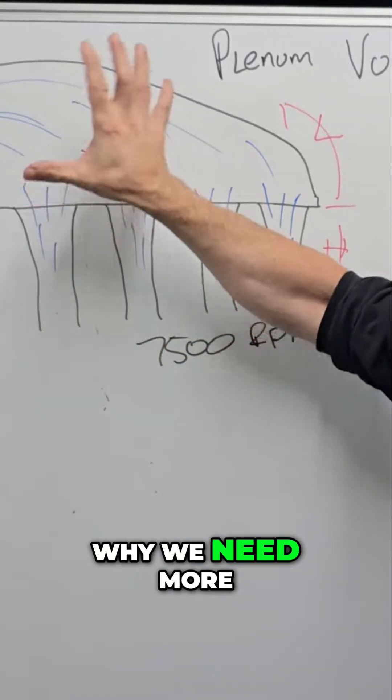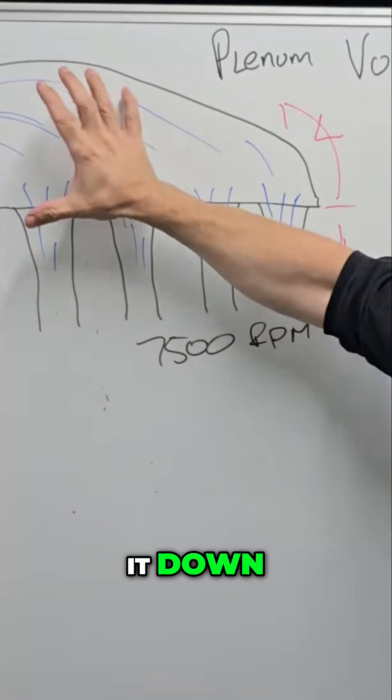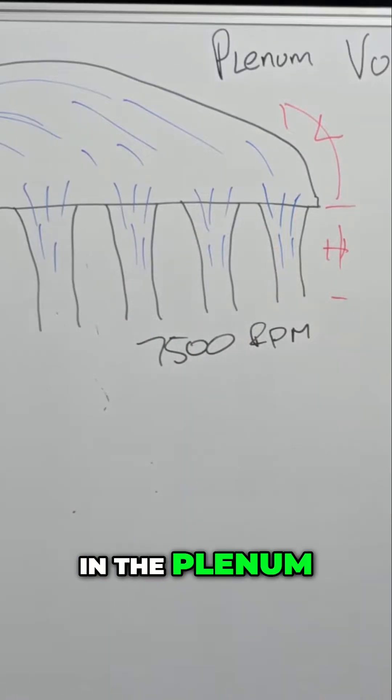And the reason why we need more volume in biased throttle body positions is we need to slow it down and we also need some taper to compensate in the plenum.